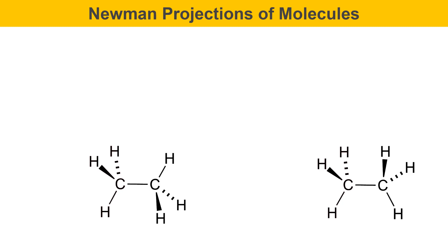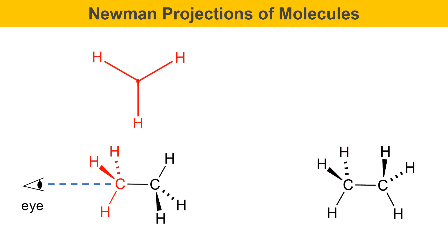We'll start by drawing a Newman projection of the staggered structure. The first thing you need to do is set your perspective — imagining you're looking down the carbon-carbon single bond. The carbon to the left is closer to our eye, highlighted in red. We draw the front carbon as a dot. From this perspective, there's a hydrogen pointing straight down on the front carbon. The dashed hydrogen points upper-left and the wedged hydrogen points upper-right. The back carbon is represented by a circle, with bonds emanating from that circle. The back carbon has a hydrogen pointing up, one pointing lower-left, and one pointing lower-right. This is the Newman projection of the staggered conformation.